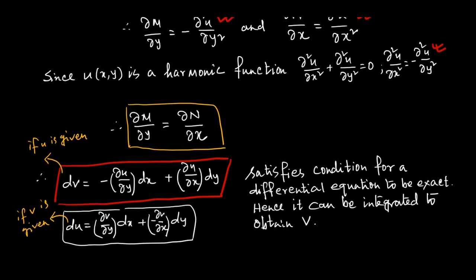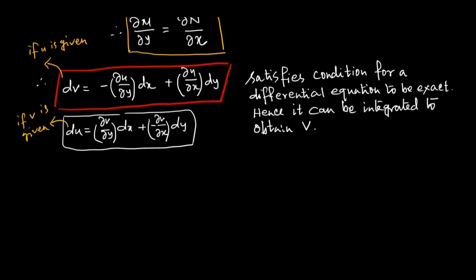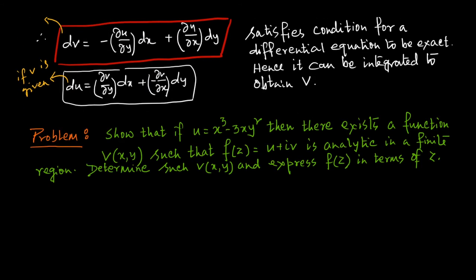Now let us solve a problem to have a better understanding. Given that u equals x³ minus 3xy², show that there exists a function v(x,y) such that f(z) equals u plus iv is analytic in a finite region, determine v(x,y), and express f(z) in terms of z. The problem has three parts: first show a harmonic conjugate exists, second find v, and third express f(z) as a function of z.